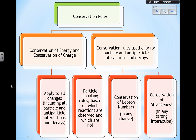We basically have two types of conservation rules. We have the conservation of energy and conservation of charge, and we have the conservation rules that are used only for particle and antiparticle interactions and decays. The first one — conservation of energy and conservation of charge — applies to all changes, including particle and antiparticle interactions and decays. So energy and charge must be conserved whatever happens. Whatever the change is, I must have the same energy and charge before and after. The other conservation rule used for particle and antiparticle interactions and decays has three parts to it, and I can have particle counting rules based on which reactions are observed and which are not.